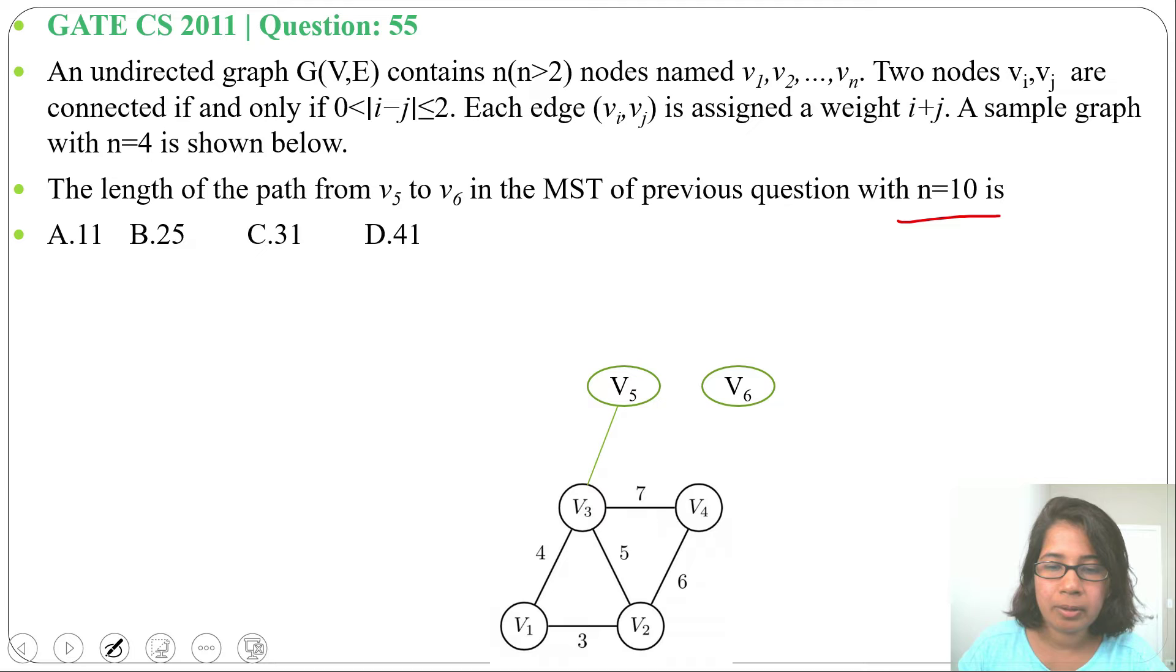And weight will be 5 plus 3 equals 8. Next, v4 and v5 will be connected, 5 minus 4 is 1, and weight will be 5 plus 4 equals 9. Next, v4 and v6 will be connected, 6 minus 4 is 2, and weight will be 10.